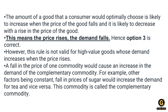Explanation: According to the law of demand, the amount of a good that a consumer would choose increases when the price falls, and decreases when the price rises. However, this rule is not valid for high-value goods whose demand increases when price rises. Also, a fall in price of one commodity causes an increase in demand for a complementary commodity — for example, a fall in price of sugar increases demand for tea.